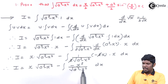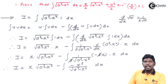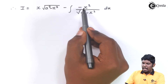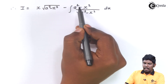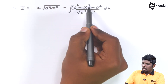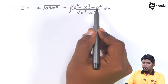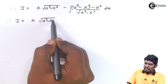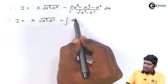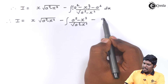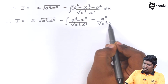We have a² - x² in the denominator and −x² in the numerator. We adjust by writing the numerator as (a² - x²) - a², giving +a² and balancing with −a². We then separate the fraction into two groups, distributing the denominator. Therefore, i = x√(a² - x²) − integral of (a² - x²)/√(a² - x²) dx + integral of a²/√(a² - x²) dx.